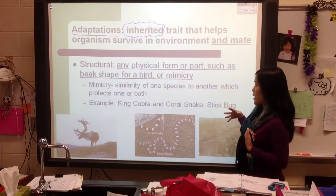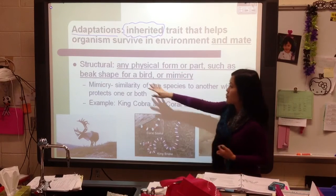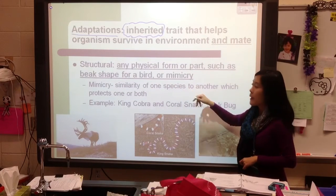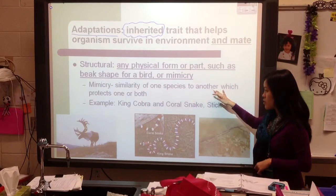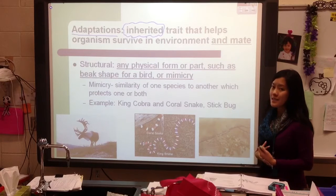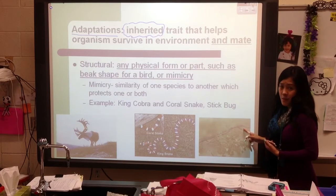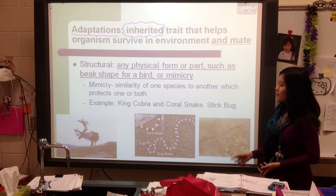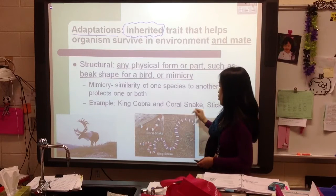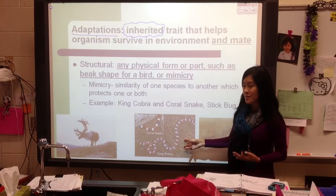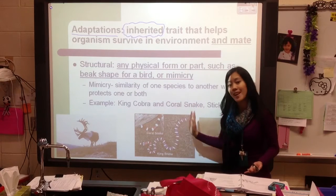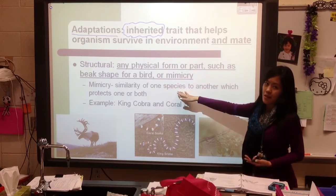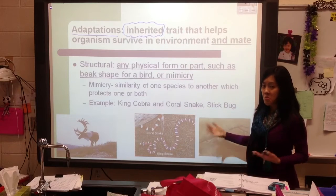Examples of structural adaptations could be the shape of a bird's beak, which we'll look at with Darwin's finches, or even mimicry. Mimicry is the similarity of one species to another, which protects one or both of them. For example, a stick bug looks like a stick — that's its benefit. We also have a king cobra and a coral snake: one is poisonous and one isn't, and the non-poisonous one mimics or copies how the other looks.